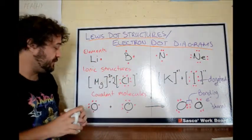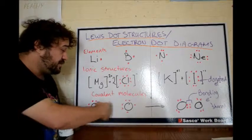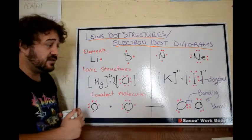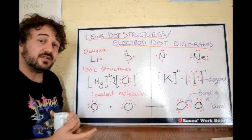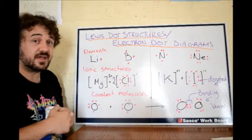Covalent molecules. Here we have oxygen. It has six in the outer shell. Now remember, with a covalent molecule, it wants to bond by sharing. It shares electrons, okay?